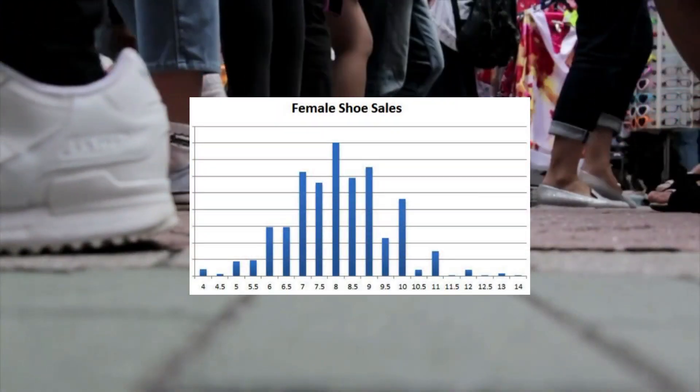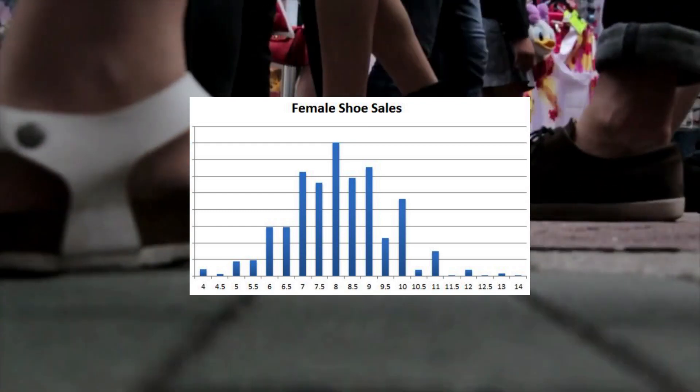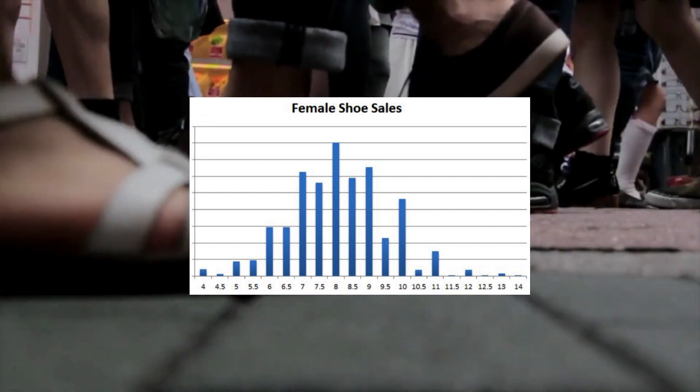Even women's shoe sizes follow the same distribution with the majority of women in the middle and less and less at the extremes of two, three, four shoe size or 13, 14, 15, again following the normal distribution.